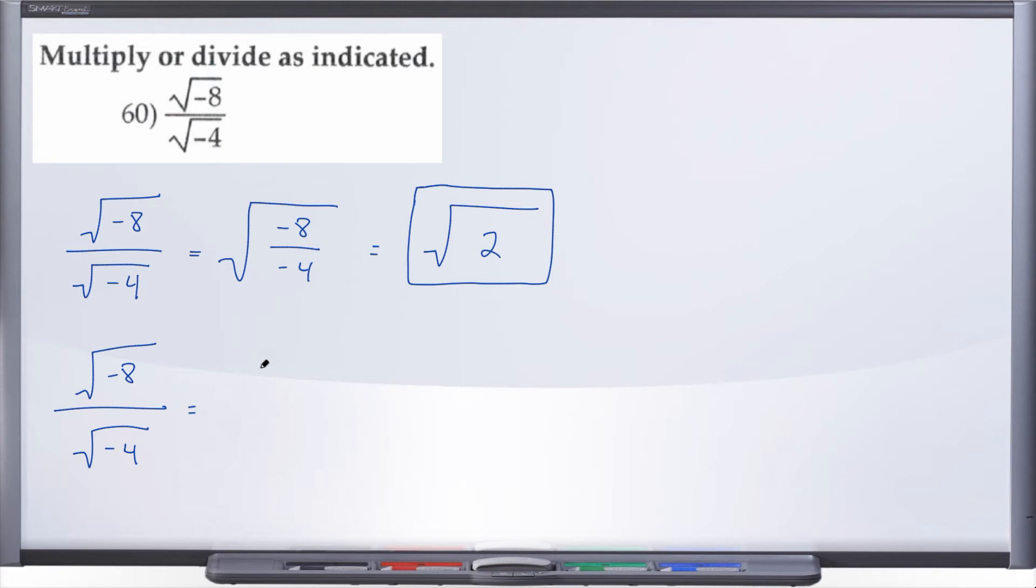Good stuff and bad stuff. And you might recall from the previous video where we talked about how the negative itself is going to be in the good radical, but 8 unfortunately is not a perfect square, so we're gonna have to break this down into good stuff bad stuff.